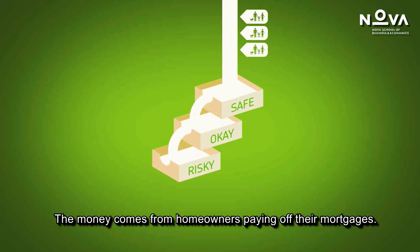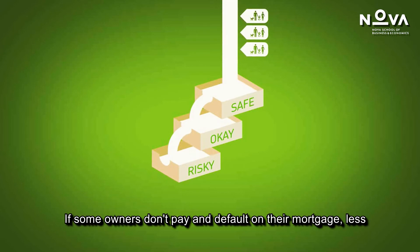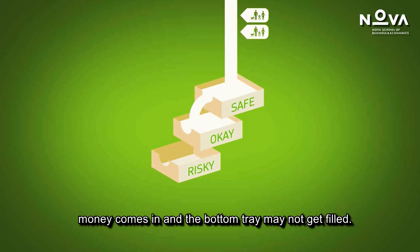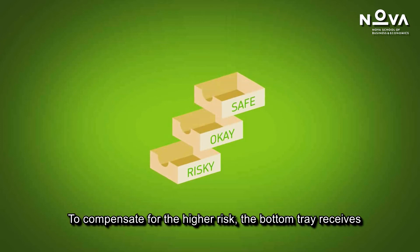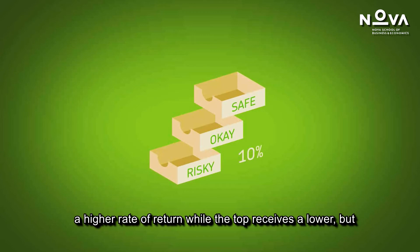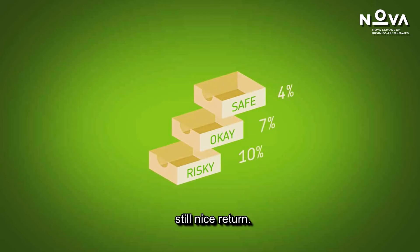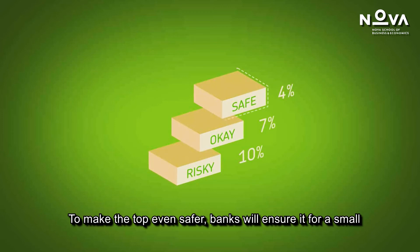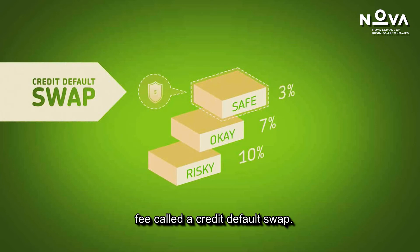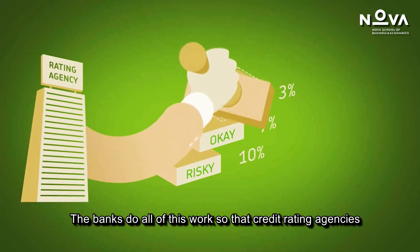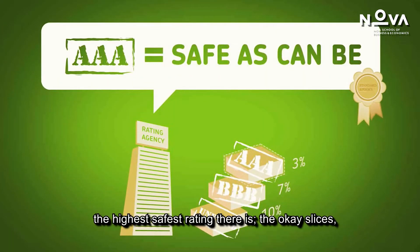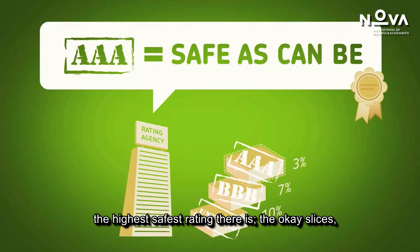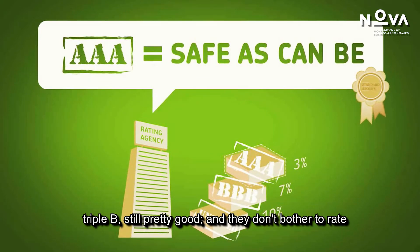The money comes from homeowners paying off their mortgages. If some owners default, less money comes in and the bottom tray may not get filled, making it riskier and the top tray safer. To compensate, the bottom tray receives a higher rate of return while the top receives a lower but still nice return. Banks insure the top slice for a small fee called a credit default swap, so credit rating agencies stamp the top slice as a safe, triple-A-rated investment. The okay slice is triple-B, and the risky slice is unrated.